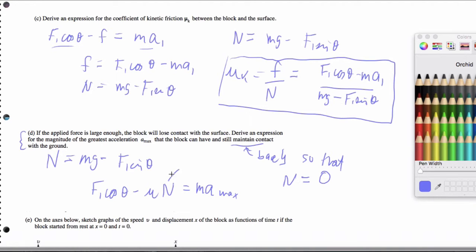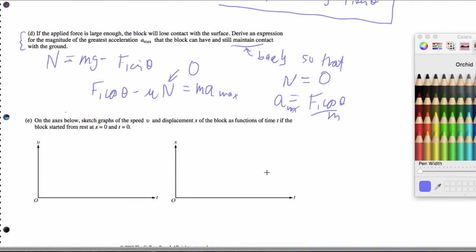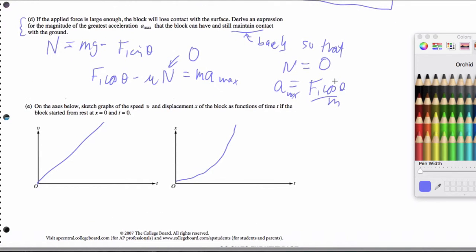And then here, this N is going to be zero. So we actually get an acceleration of F1 cos theta divided by M for the maximum of A. Now, when we sketch the velocity and the displacement versus time, let's be clear. This is a standard constant acceleration. So our velocity graph looks like this, and our position versus time graph looks like that. And we're done. So that's question number one on the free response.